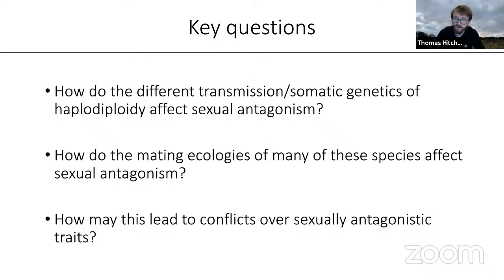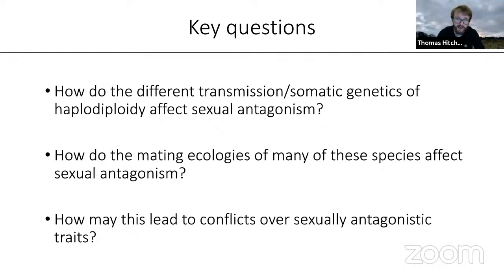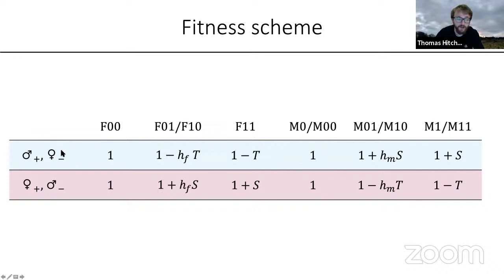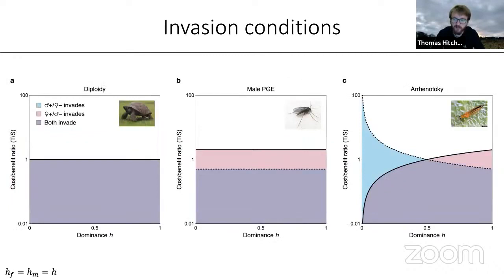The key questions we're interested in are: first, how do different combinations of transmission and somatic genetics affect haplodiploidy and sexual antagonism? Second, how do different mating ecologies affect sexual antagonism? And finally, how may this lead to conflicts over sexually antagonistic traits? We consider a fitness scheme for the invasion of a sexually antagonistic allele — a male-beneficial/female-costly scenario and a female-beneficial/male-costly scenario — where T represents cost and S represents benefit.